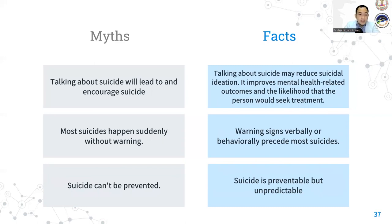Fourth myth is that talking about suicide will lead to and encourage suicide. The fact is that talking about suicide may reduce suicidal ideation. It improves mental health related outcomes and the likelihood that the person would seek treatment. The fifth myth is that most suicides happen suddenly and without warning. However, warning signs verbally or behaviorally perceive most suicides according to research. The last myth is that suicide cannot be prevented. This is not true. Suicide is preventable, but it is just only unpredictable.